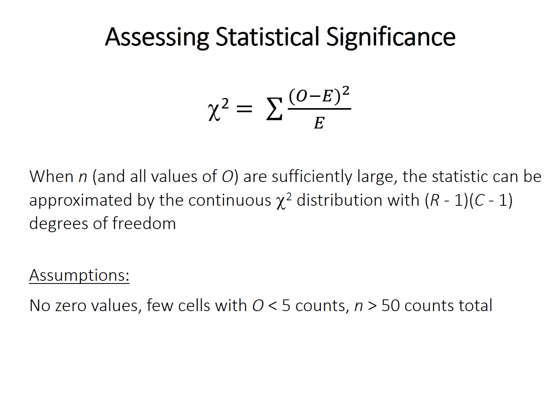We want to know whether that chi-squared value is statistically significant. When the overall count n is large, and when all observed counts O are also sufficiently large, the test statistic can be approximated by the continuous chi-squared distribution. We have discrete data, but the chi-squared distribution is continuous, so it's an approximation. The degrees of freedom for that distribution are the number of rows minus 1 multiplied by the number of columns minus 1: (R − 1) × (C − 1).